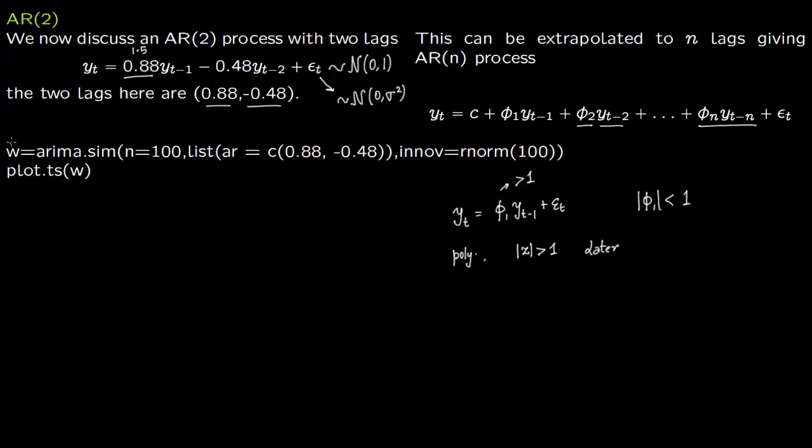The commands here are similar as before. w is the series, a vector of numbers y_1, y_2, y_3, y_4 all the way to y_100 because we are generating 100 such numbers. This is the command for autoregressive: you put both variables ar = c(0.88, -0.48) and this is our error term.